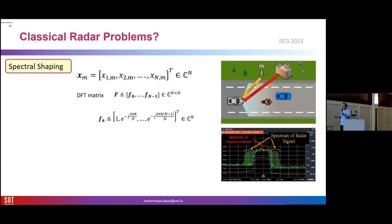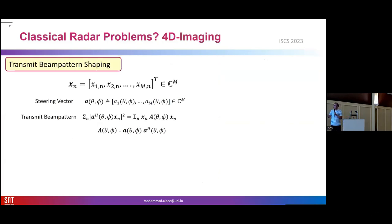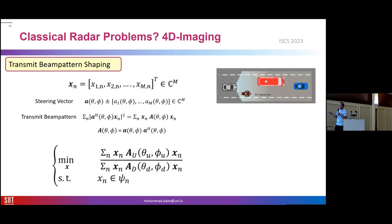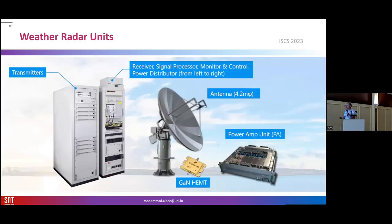This is one application of waveform design. There are other applications like spectral shaping — for example when a communication system is working in some spectrum domain and the radar wants to avoid those frequencies, using waveform design to do spectral shaping. There is also transmit beam pattern shaping for automotive radar imaging systems, where we try to beamform the transmitters in specific directions to enhance estimation accuracy.